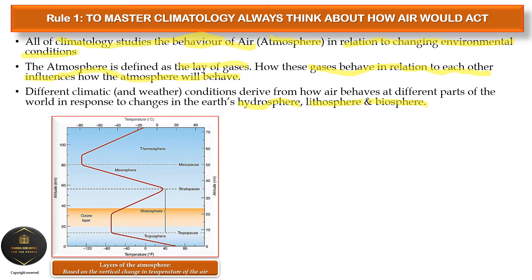The first layer extends from zero altitude to 20 kilometers and is called the troposphere. This is the layer where we live. Temperatures in the troposphere range from 60 degrees Celsius down to approximately negative 40 degrees Celsius.